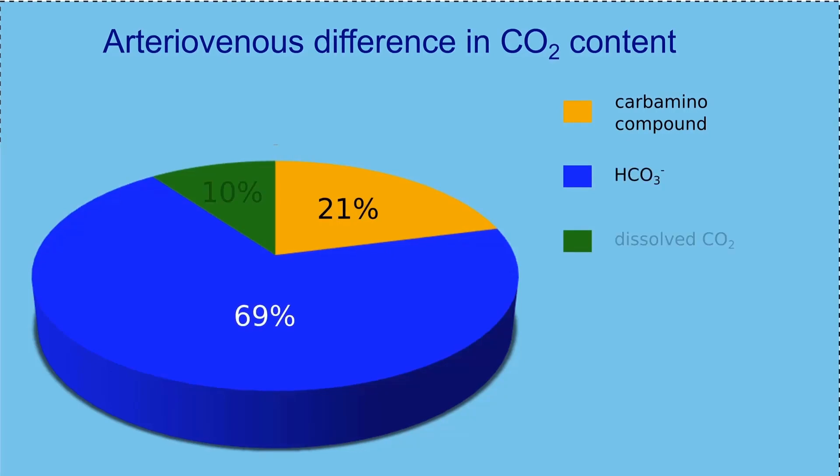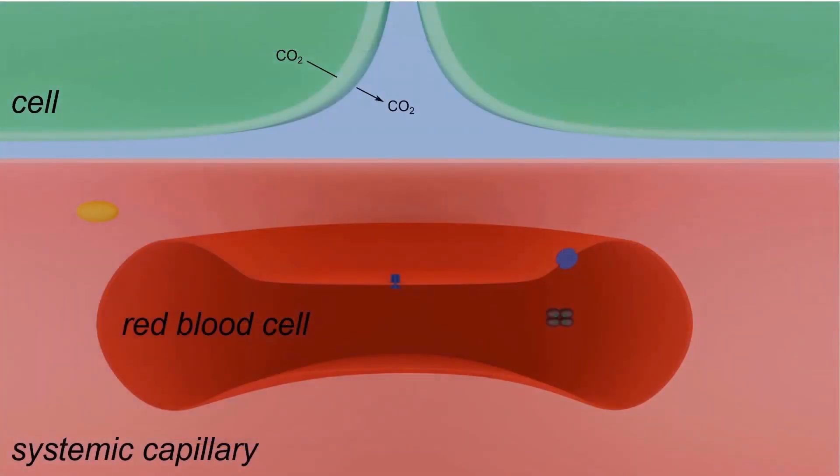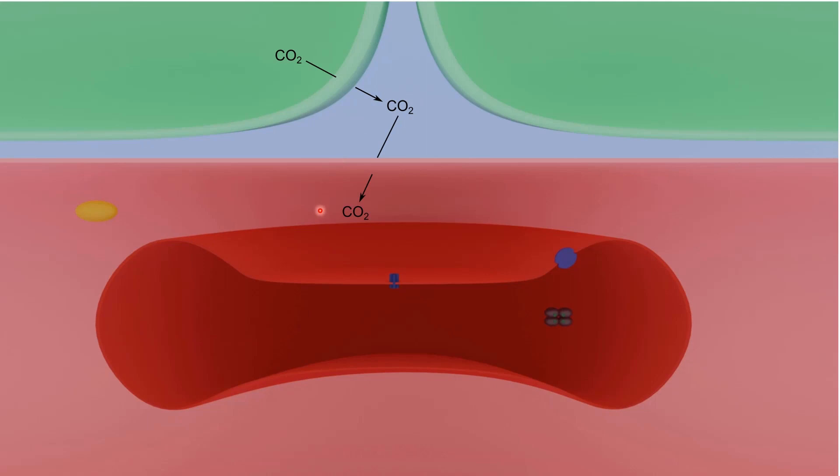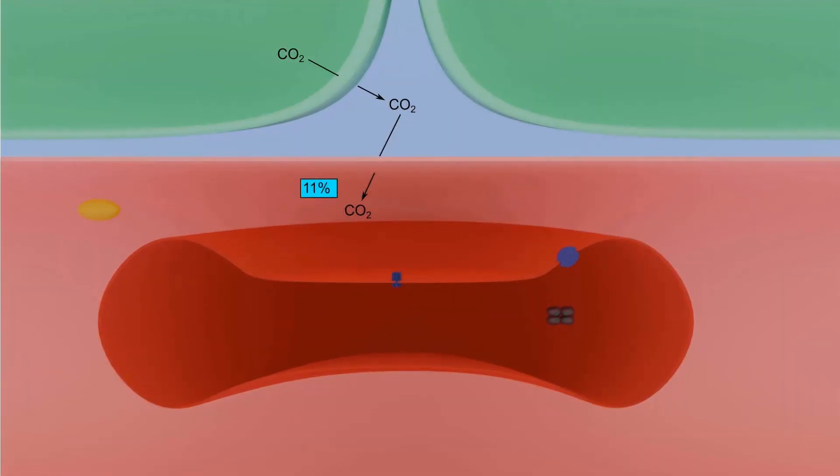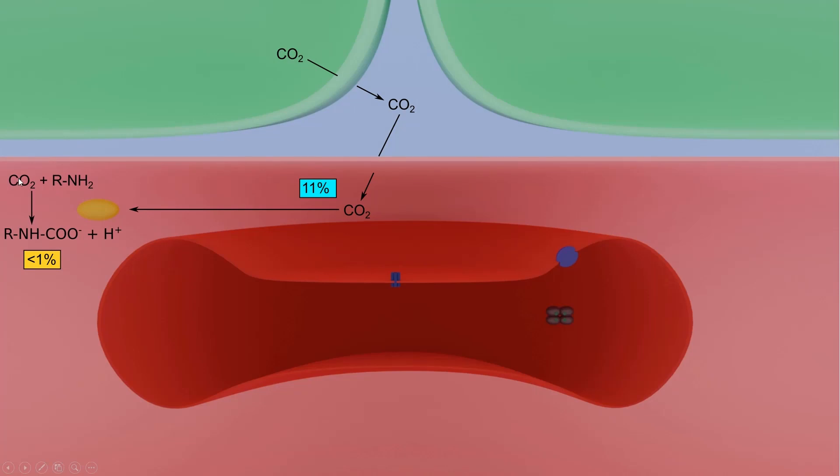Let's consider transformation of carbon dioxide as it enters the blood in systemic capillaries. In the picture we can see cells, a capillary, and an erythrocyte. CO2 produced by cells moves to the interstitium, then enters the blood through the capillary walls. Of the total amount of produced carbon dioxide, 11% remains in the plasma. A very insignificant portion of CO2 forms carbamino compounds with amino groups of plasma proteins, virtually negligible, less than 1%. Six percent of carbon dioxide is transported in the dissolved state.